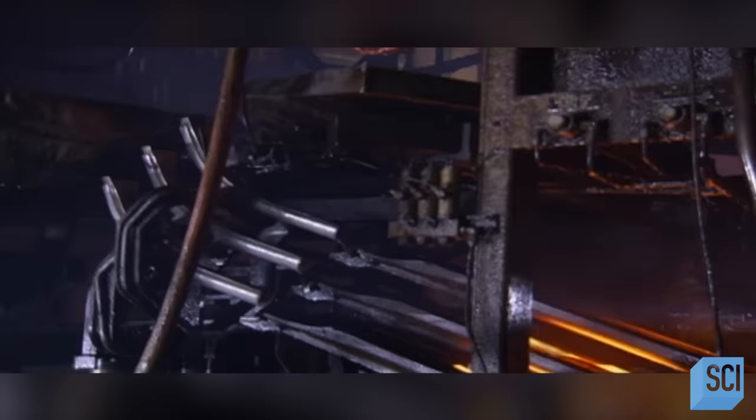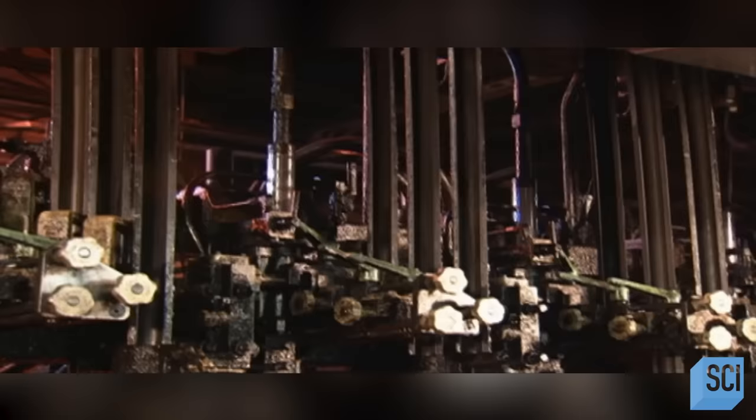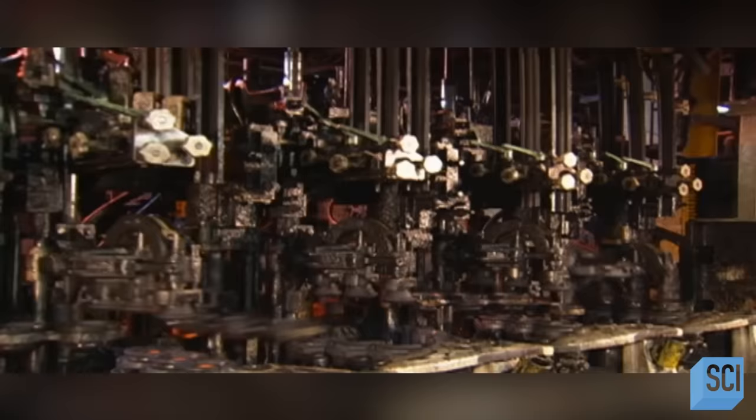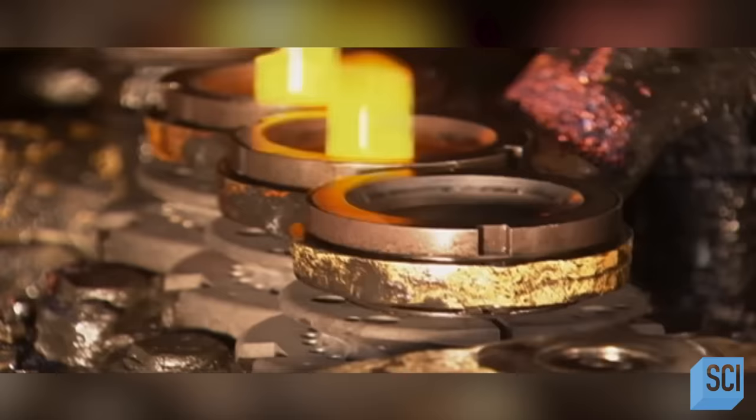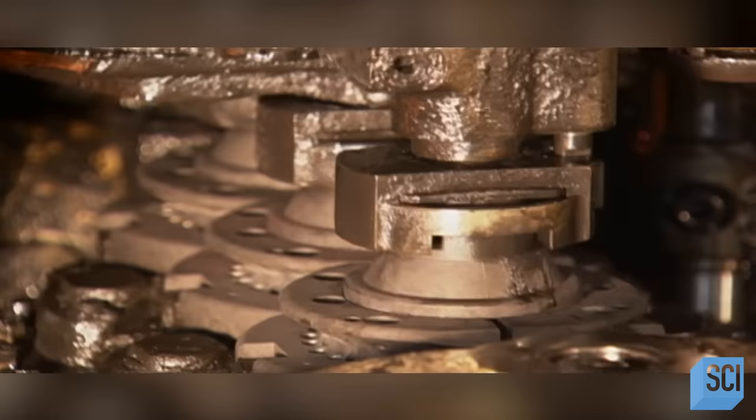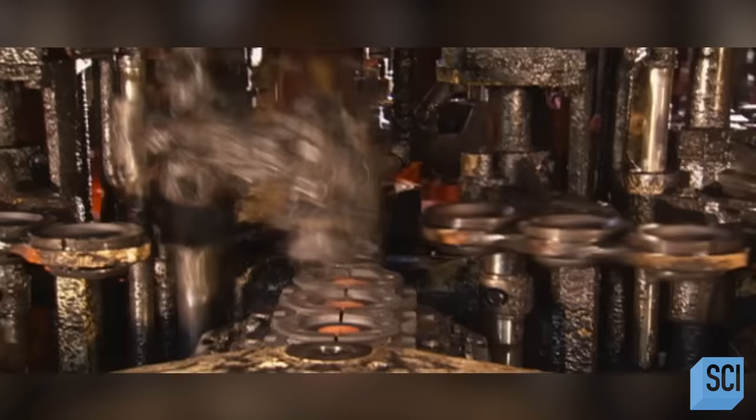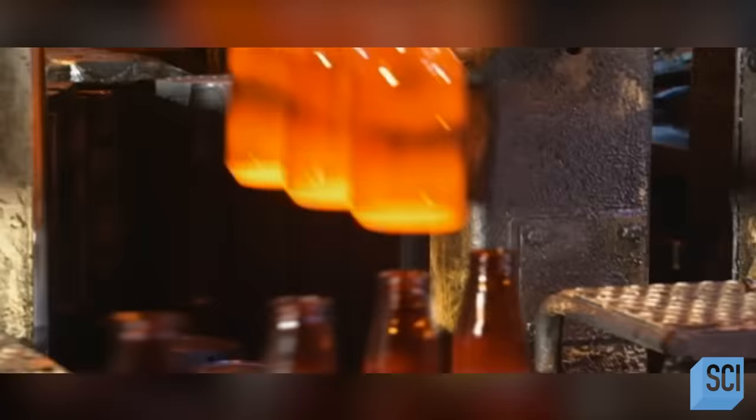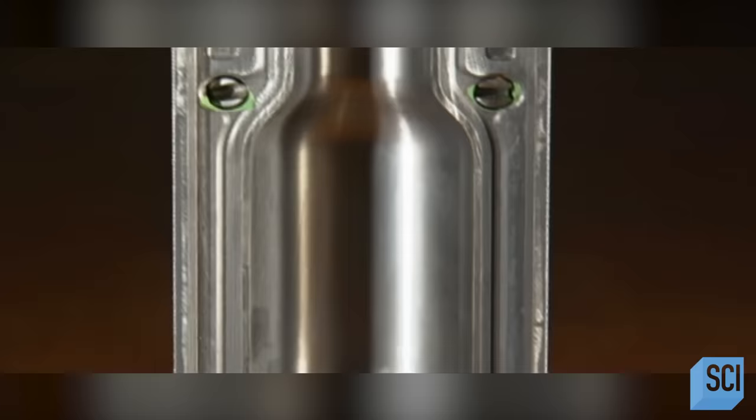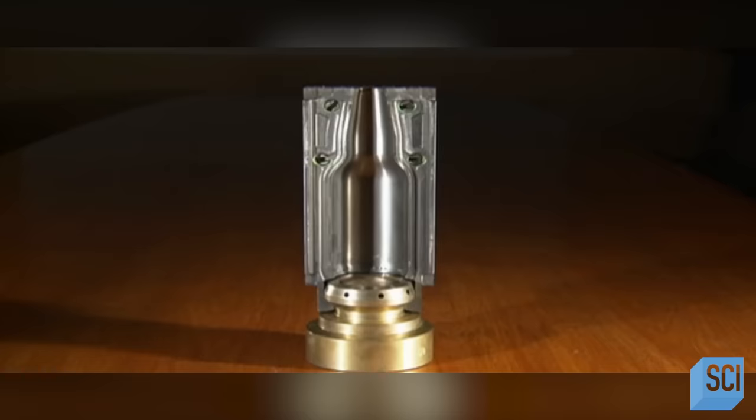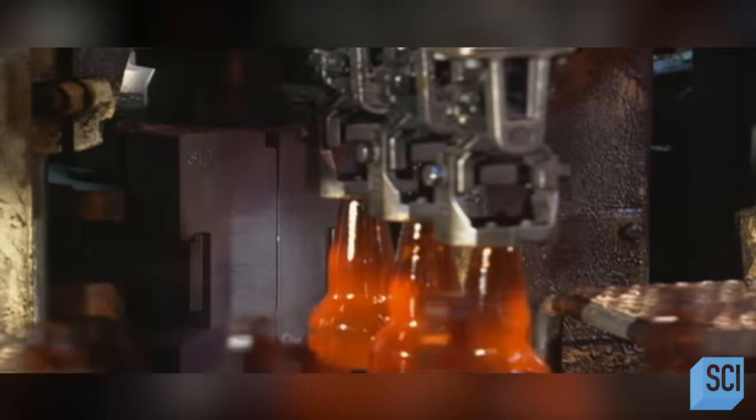Each gob is the exact amount required to make one bottle or jar. They drop to a device called the scoop. The scoop moves them to troughs that feed them to jar forming and bottle forming machines. A gob of molten glass goes into a preliminary mold. In a matter of seconds, it comes out as a parison, a miniature version of the final bottle. Each parison then moves into a blow mold. The equipment blows compressed air into the parison, stretching the glass outward toward the wall of the mold cavity.